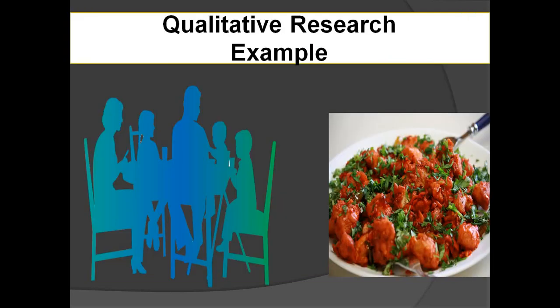In qualitative research, suppose a family of five members taste a dish. They may all have the same opinion about the dish — they may all like it. In that case, opinion about the taste is not a variable. But if they have different opinions — one says the dish is delectable, another says it is good, a third says it is okay, and a fourth says it is not good — then opinion varies.